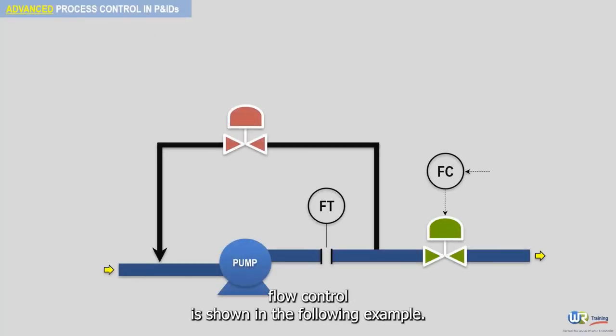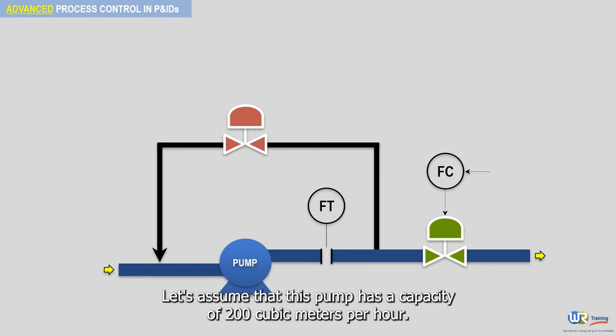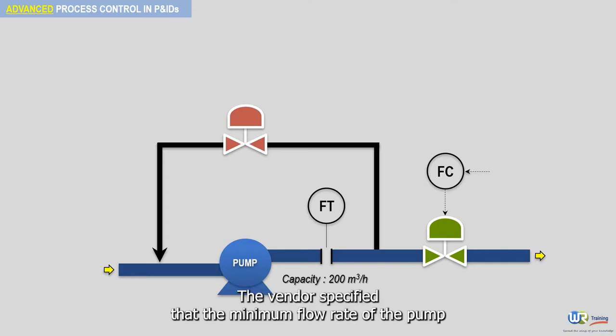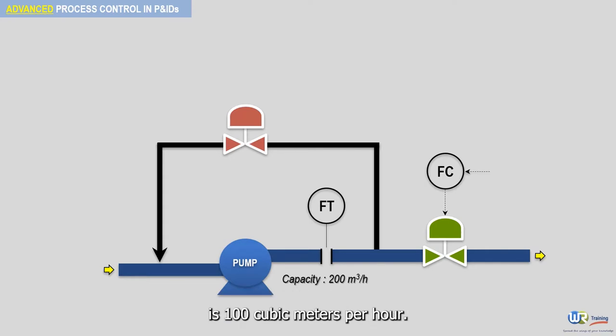The concept of minimum flow control is shown in the following example. Let's assume that this pump has a capacity of 200 cubic meters per hour. The vendor specified that the minimum flow rate of the pump is 100 cubic meters per hour.